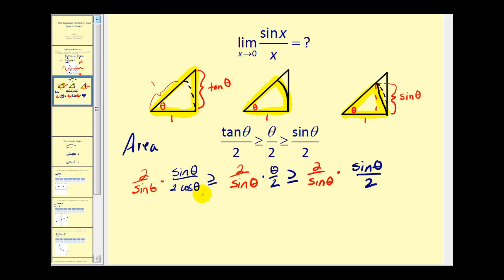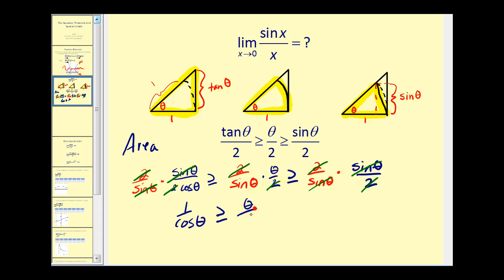Now when we simplify, the result is: one over cosine theta is greater than or equal to theta divided by sine theta, which is greater than or equal to one.